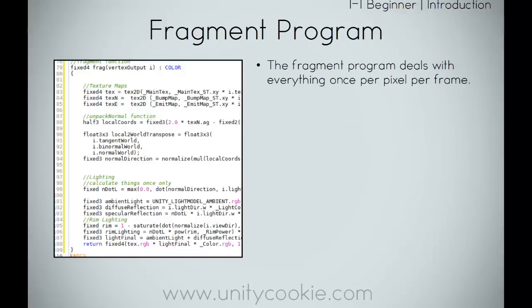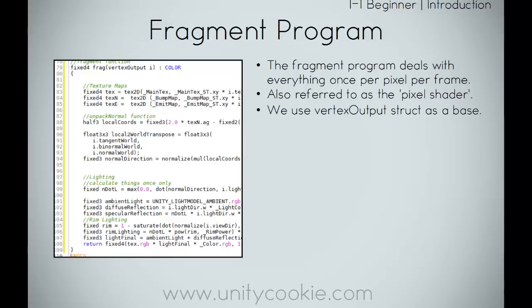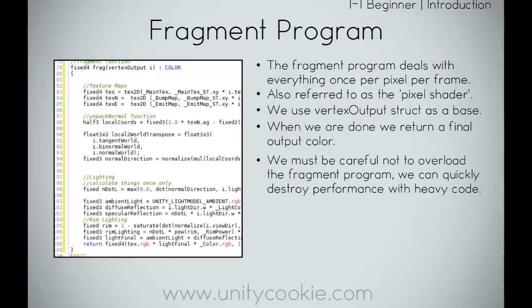The fragment program deals with everything once per pixel per frame — it's also referred to as the pixel shader. We use the vertex output struct as a base, and when we are done we return a final output colour. We must be careful not to overload the fragment program, as we can quickly destroy performance with heavy code.